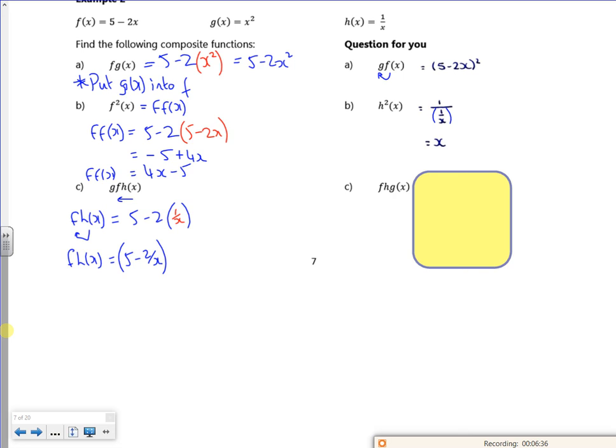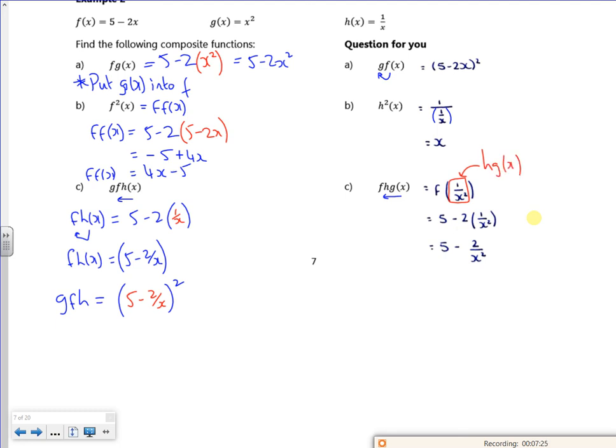Now that is going to get put into g. So I've got g of f of h. So the x in g gets replaced by 5 minus 2 over x. You don't need to expand a lot of this. So I would, with this one, do h of g first, and then put that answer into f. So putting g into h gives me 1 over x squared. So that bit there is h, g of x. And then I've replaced the x in f with it, and that's what it gives me there.